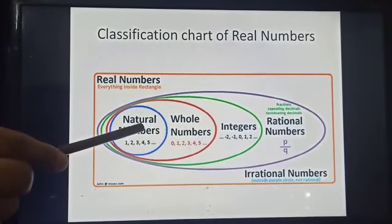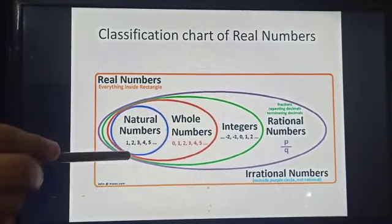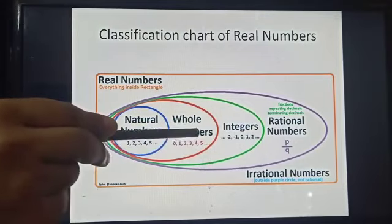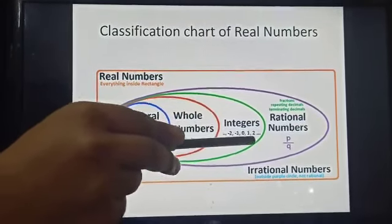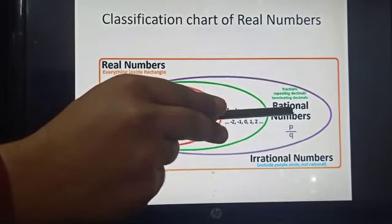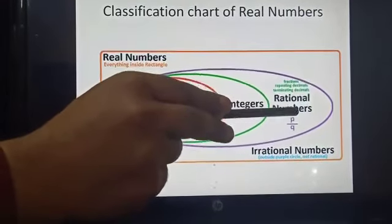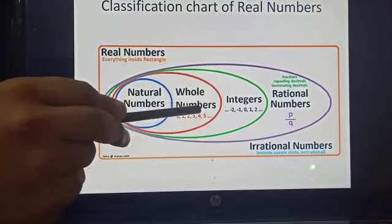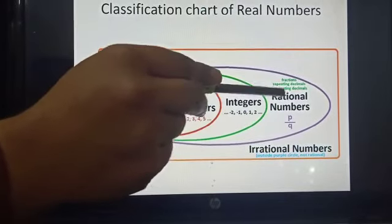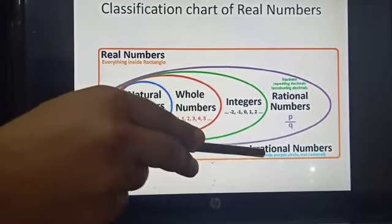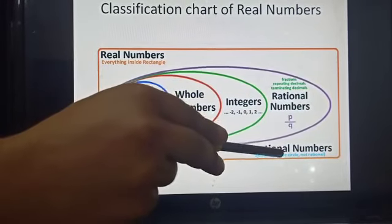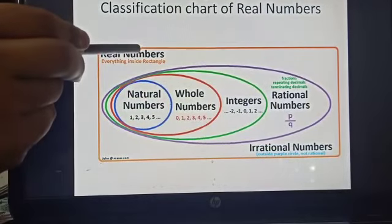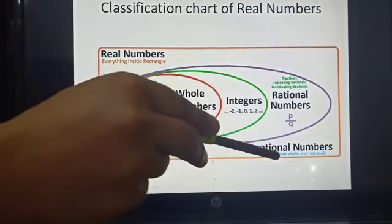Looking at the classification chart: natural numbers start with 1, 2, 3 and so on. Whole numbers start from 0, 1, 2 and so on. Integers consist of positive, negative, and zero. Any number that can be written in the p/q form is a rational number. All natural numbers are whole numbers, all whole numbers are integers, and all integers are rational numbers. Irrational numbers cannot be written as fractions. The combination of rational and irrational gives you real numbers.